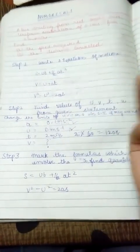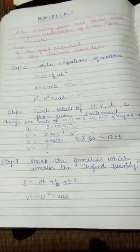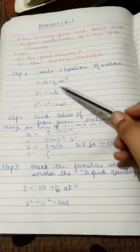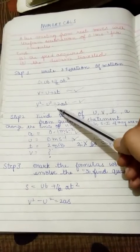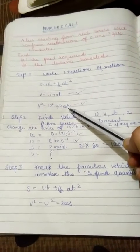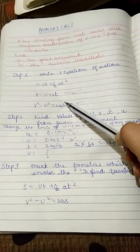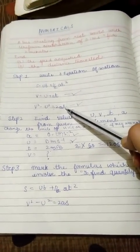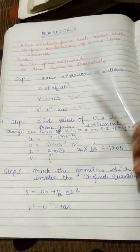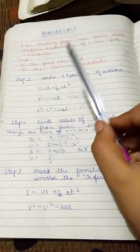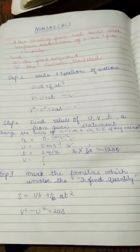Now, we have to choose only one formula to solve our numerical. We have to choose this or we can choose this. But we cannot choose this now because we don't have the quantity s that is distance travel. So we have to choose this formula to find v, that means speed. So let's find v.